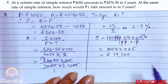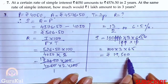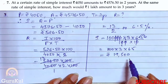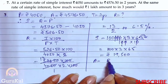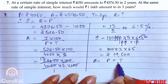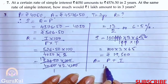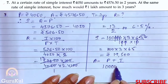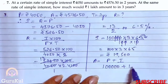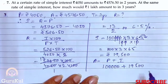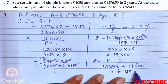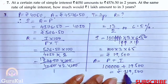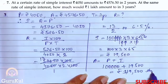So the interest comes out to Rs. 19,500. The question asked for the amount. Amount = P + Interest = 1,00,000 + 19,500 = Rs. 1,19,500. This will be the amount.